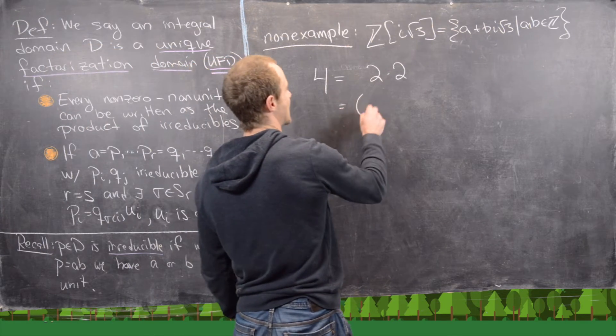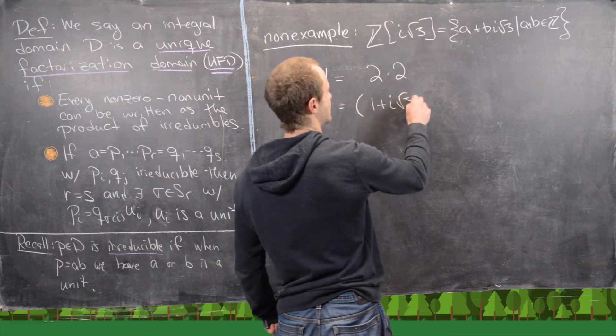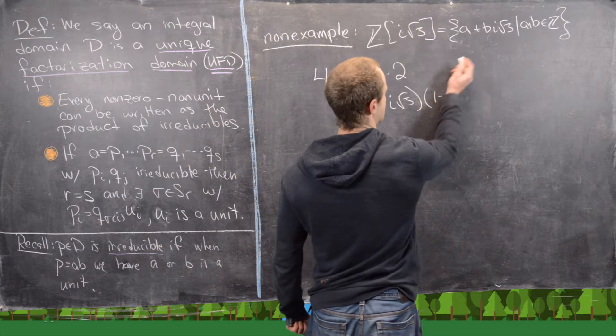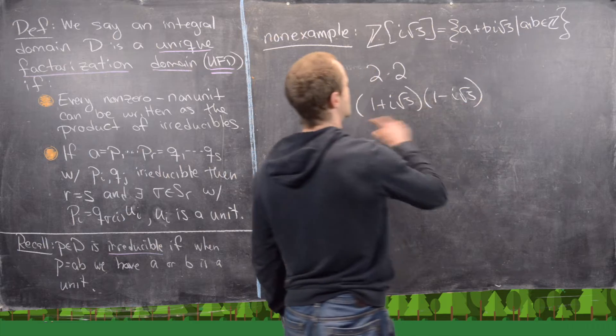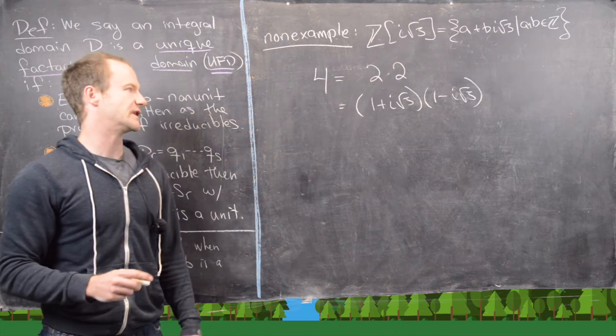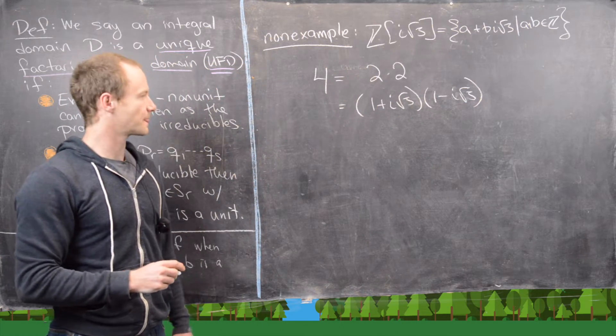But we can also factor it as 1 plus I root 3 times 1 minus I root 3. So notice if we were to foil that out, we would get 1 plus 3 or 4.